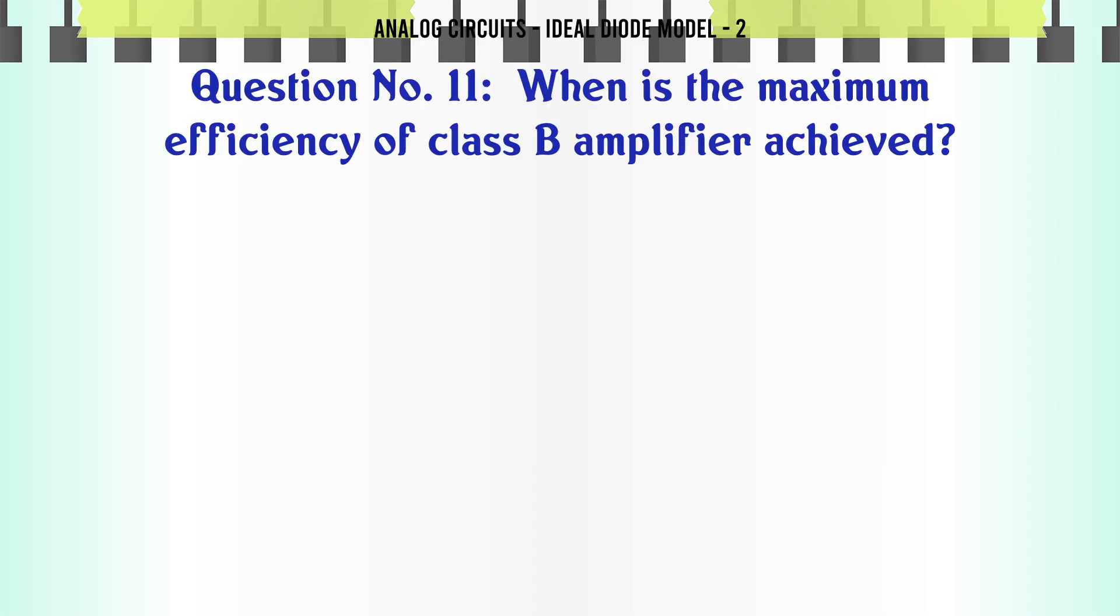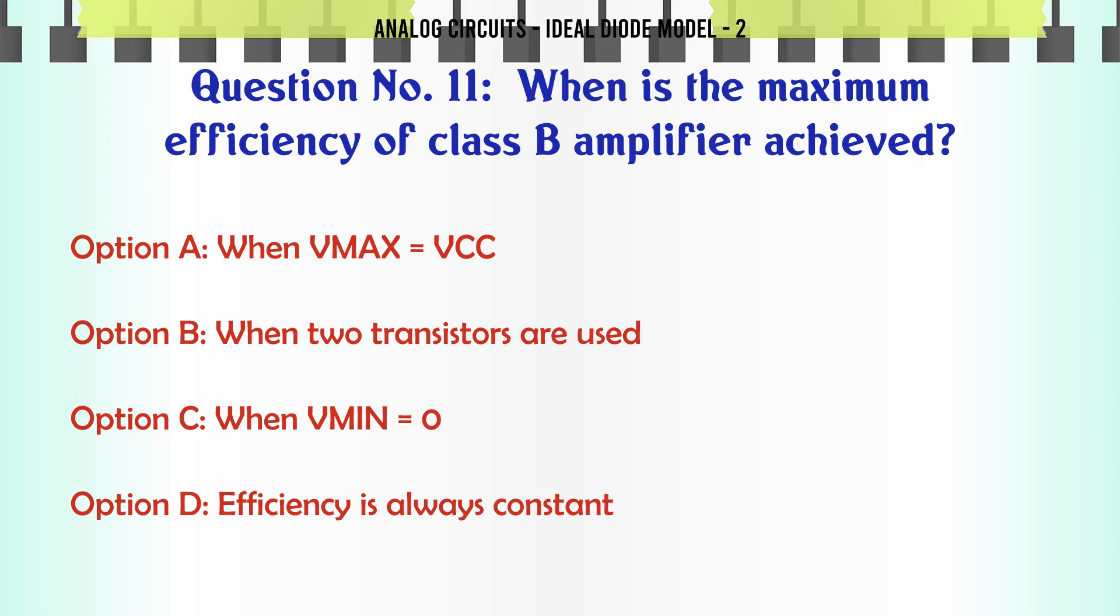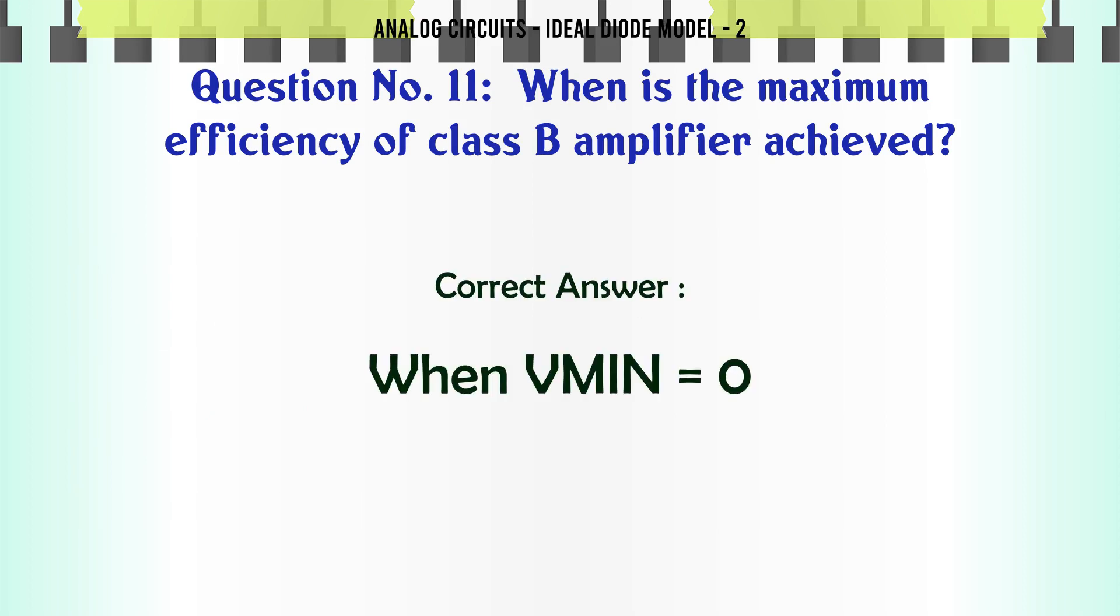When is the maximum efficiency of class B amplifier achieved? A) When max Vcc, B) When two transistors are used, C) When min zero, D) The efficiency is always constant. The correct answer is: When min zero.